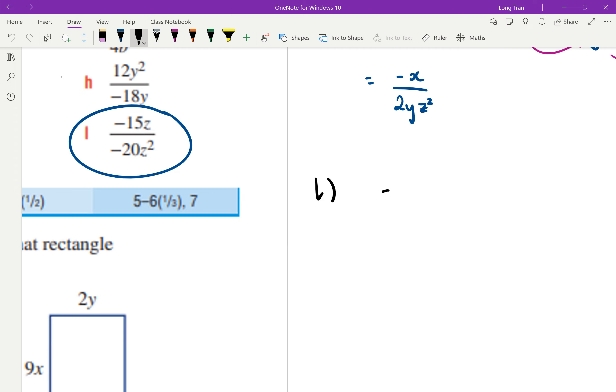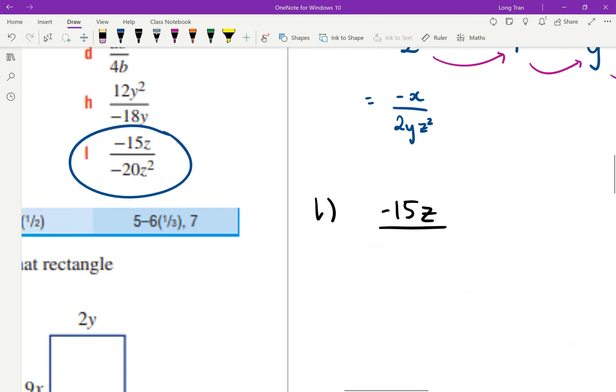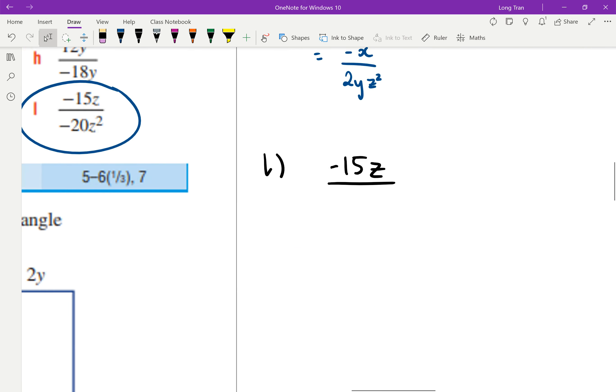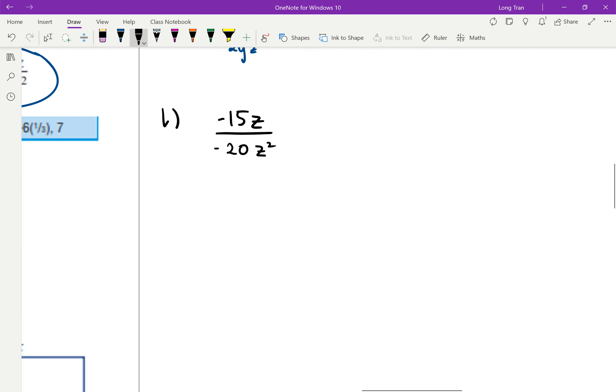So, you got l, negative 15z all over negative 20z squared. So, if I were to do this, same thing again, I would split the fraction apart. We know that negative 15z just simply means negative 15 times z on the top, in the numerator. And now I'm going to split the fraction up.